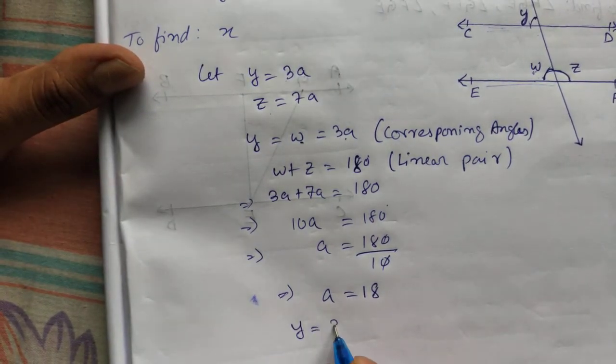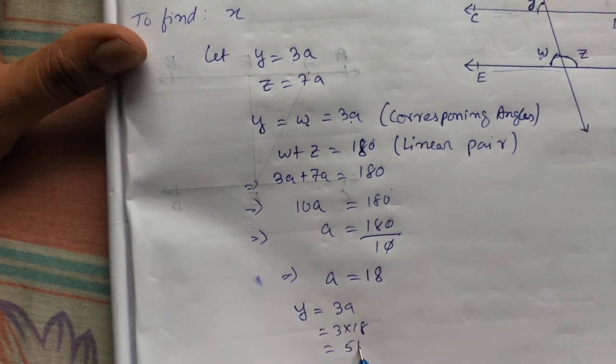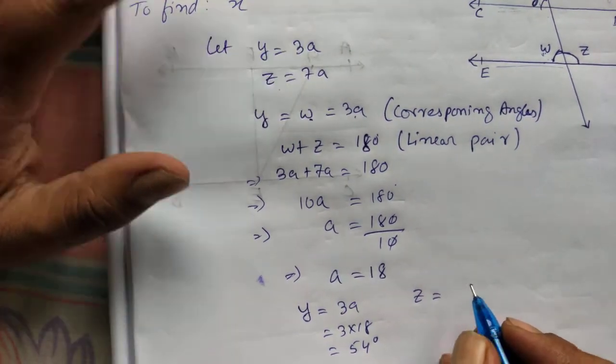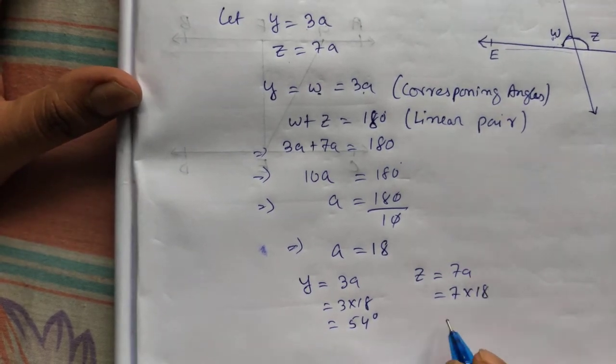y equal to 3a. That means 3 into 18 will be 54 degree. z equal to 7a.